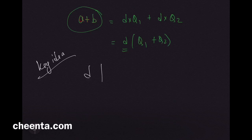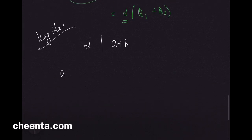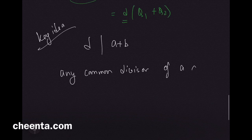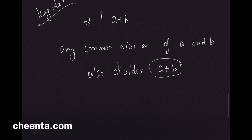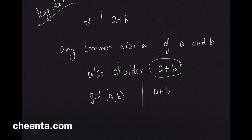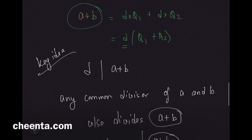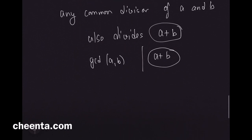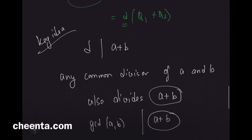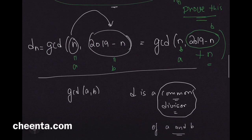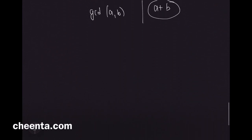So any common divisor of a and b also divides a + b. The GCD of a and b will also divide a + b — but that doesn't automatically imply that GCD(a+b, a) equals GCD(a, b), so you have to work a little bit harder to complete the proof.